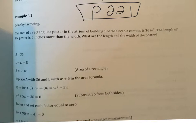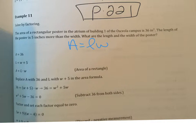The first thing we need is a formula for area. The area of a rectangle is found by multiplying length times width. We know that the length of the poster is five inches more than the width, so the length equals five plus the width.